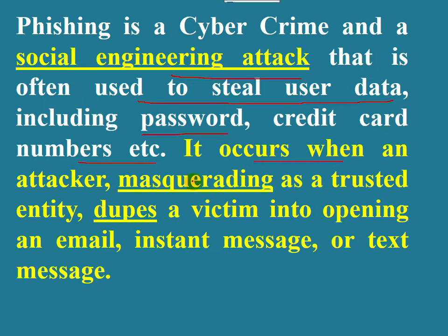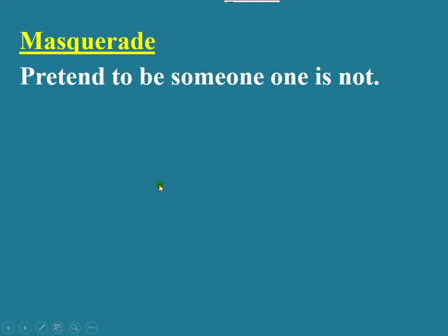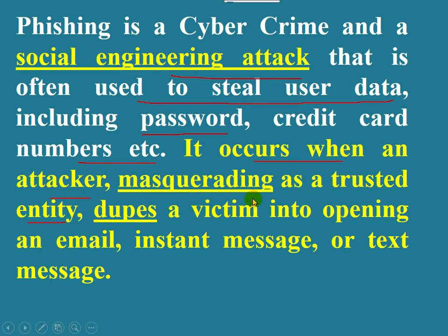Phishing occurs when an attacker masquerades as a trusted entity. What is the meaning of masquerading? Pretending — the attacker is not actually that trusted person but pretends to be. So the attacker masquerades as a trusted entity.